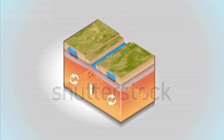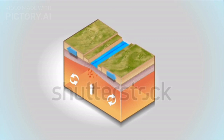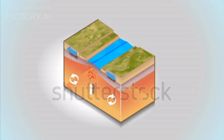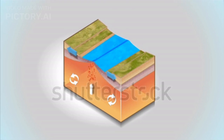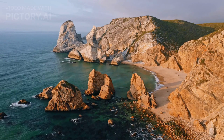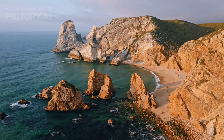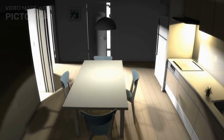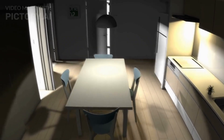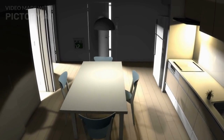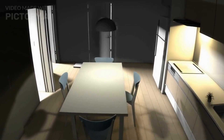At divergent boundaries, tectonic plates move away from each other, creating gaps. This movement can lead to the formation of mid-ocean ridges and rift valleys. The separation of plates can cause stress and earthquakes, although they are generally less intense than those at convergent boundaries.